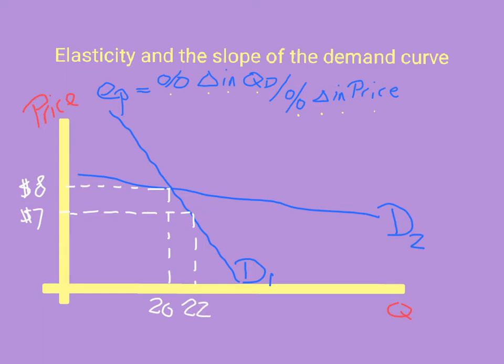We can see there has been a small increase in the quantity demanded from 20 to 22, which means that the numerator — the percentage change in quantity demanded — is relatively small compared to the percentage change in the price. So this ratio is relatively small, meaning the price elasticity of demand for D1 is relatively small.